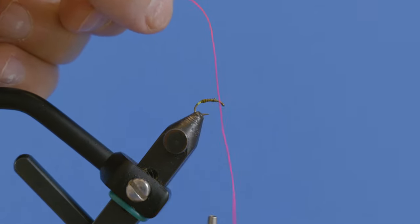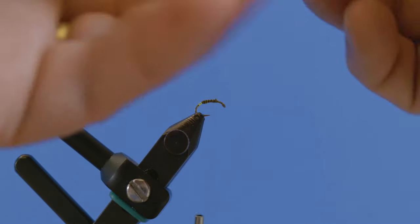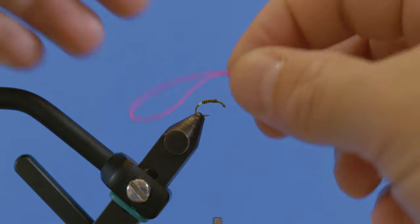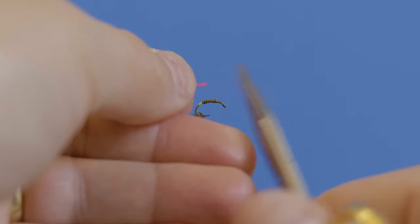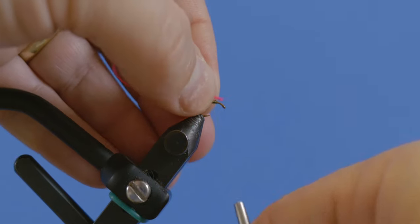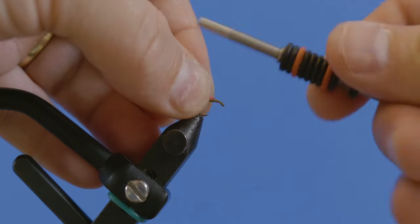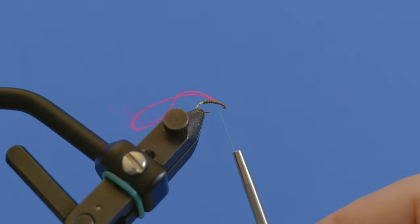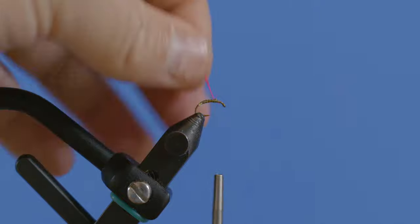Next thing that we're going to add is some Glow Bright number one. I've got a single thread here. I'm going to double that over. You guys have seen me double this over before, so I've got it doubled in a loop like that. I'm going to come in with my scissors, trim that off flush so those two ends are lined up, and then come in just like this and capture that thread up on top like this.